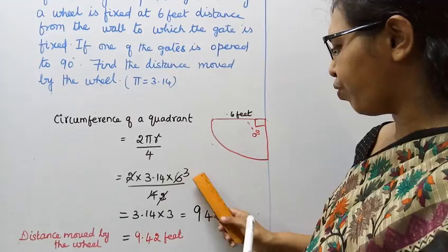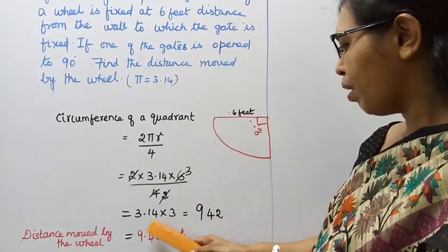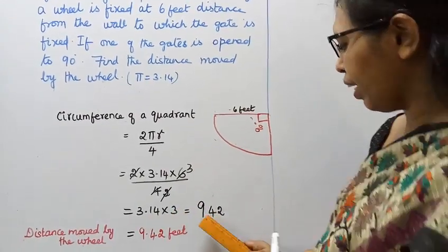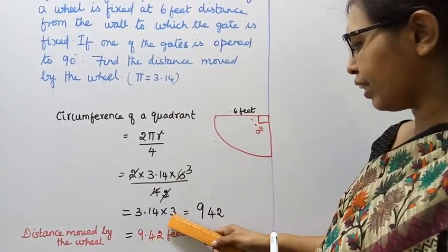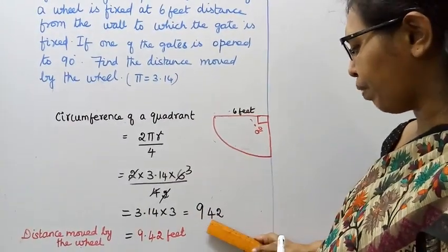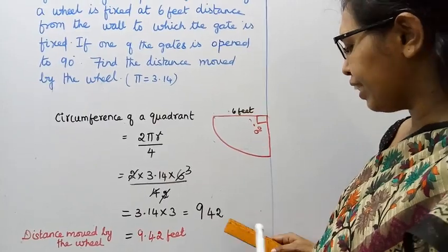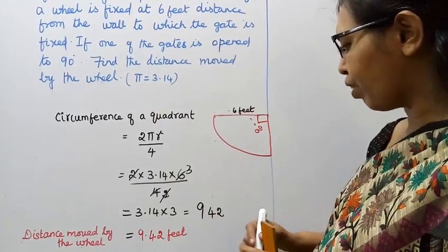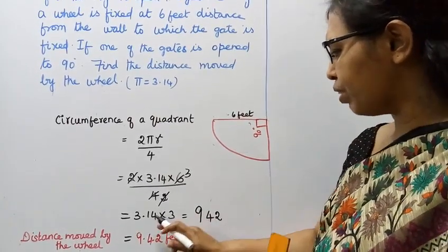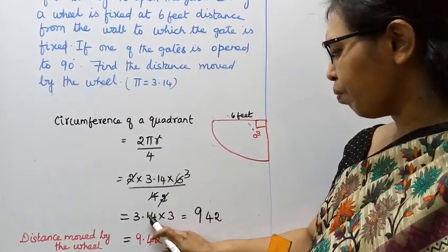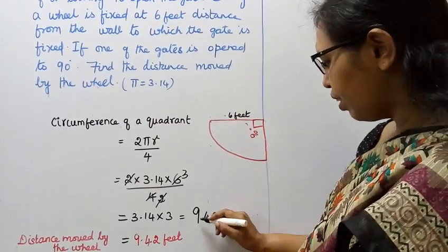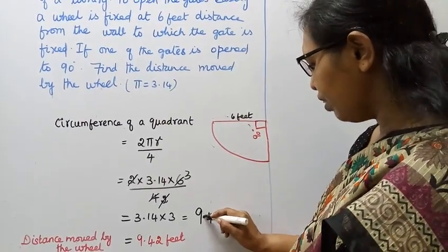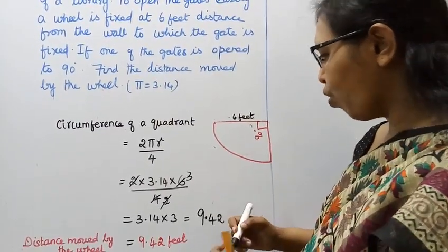So the calculation is 3.14 × 3. Multiply: 314 × 3 equals 942. With 2 decimal digits, place the point — this gives 9.42.